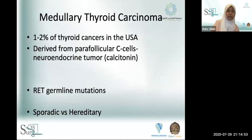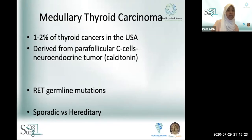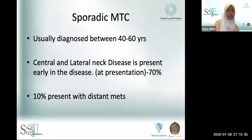Medullary thyroid carcinoma constitutes 1-2% of thyroid cancers. It's derived from parafollicular C cells and is considered a neuroendocrine tumor. It secretes calcitonin and carcinoembryonic antigen. Patients have RET germline mutations; the RET oncogene is expressed in cells derived from neural crest cells, branchial arches, and urogenital system. There are two types: sporadic, diagnosed in older patients with poor prognosis — cervical lymph node metastases in up to 70% and distant metastases in up to 10% at presentation — and hereditary.